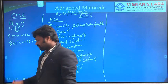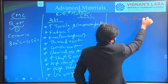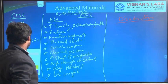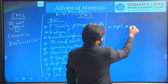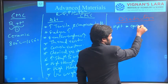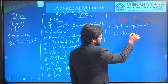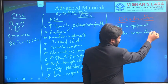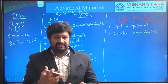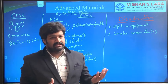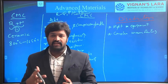Now we will discuss the limitations of Ceramic Matrix Composites. It requires high melting furnaces and high sophisticated equipment. The melting temperatures of ceramics are very high, and to handle those materials at that temperature requires high furnaces as well as sophisticated equipment. There is also complex fabrication and complex manufacturing involved.